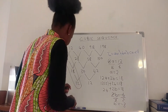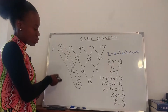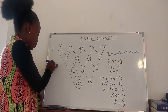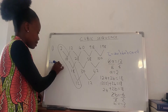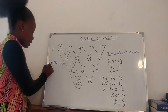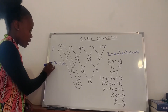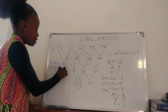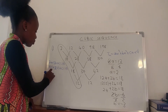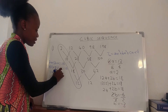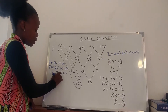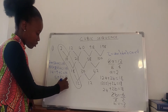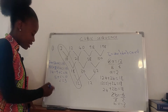To find c, we say 7a + 3b + c = the first term of the first differences, which is 10. Substituting: 7×2 + 3×(−3) + c = 10, giving 14 − 9 + c = 10, so 5 + c = 10, and c = 5.